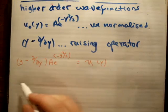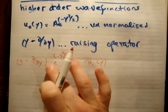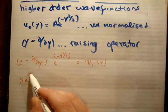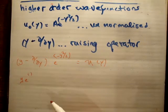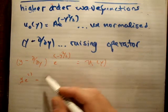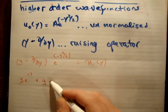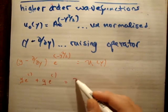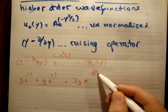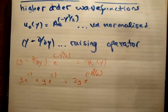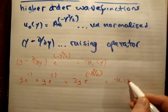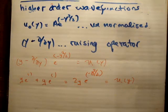I'm going to ignore the constant 'a' since it doesn't really matter. So we're going to have y times e^(-y²/2), minus d/dy of e^(-y²/2), which gives minus(-y)e^(-y²/2), so that's plus y e^(-y²/2). That gives us 2y e^(-y²/2), and this is our un-normalized u1(y) — the first excited wave function.